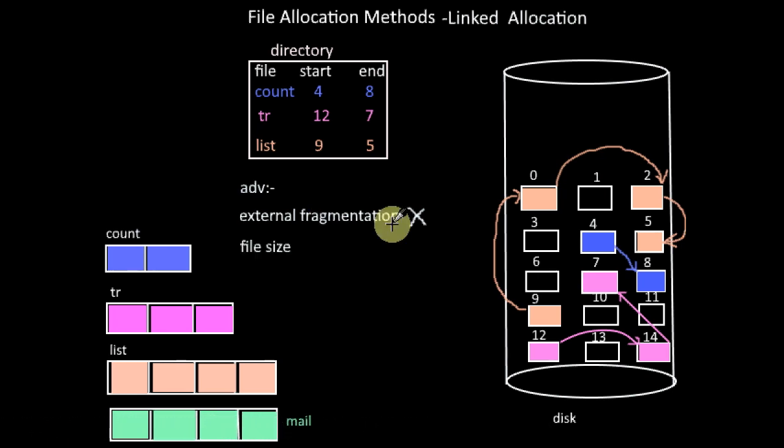The next advantage is regarding the size of the file. Even if the size of the file is not known at the time of file creation, it isn't an issue since we do not need a contiguous set of blocks. Also, as long as free blocks are available, the file can continue to grow.